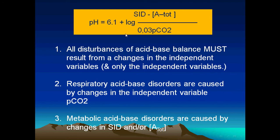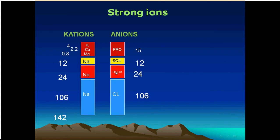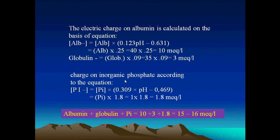The factors that determine hydrogen ion concentration are strong ion difference, total weak acids, and carbon dioxide. Strong ion difference is regulated by the gastrointestinal tract and the kidney, while total weak acids act as constants. Carbon dioxide and hydrogen ions are the net results of their actions, and bicarbonate is also a net result. When we study weak acids and weak anions, these include albumin, globulins, and inorganic phosphate.